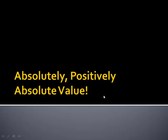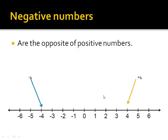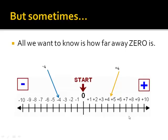Absolutely, positively, absolute value. Negative numbers are the opposite of positive numbers. But sometimes, all we want to know is how far away zero is.